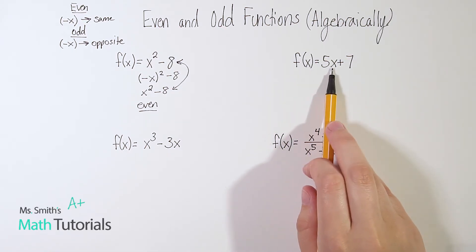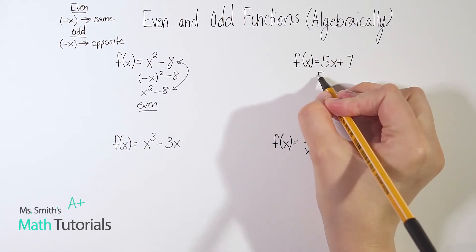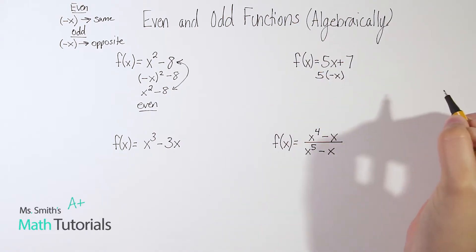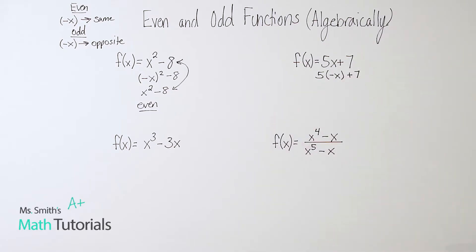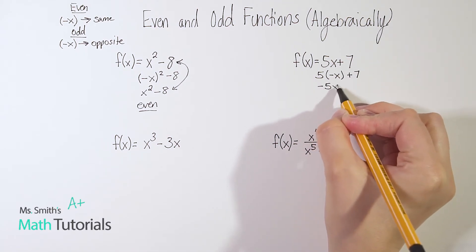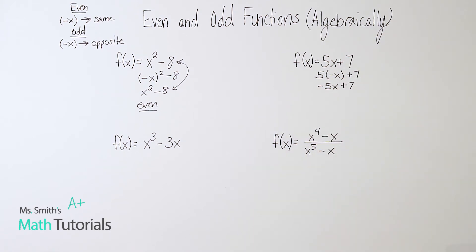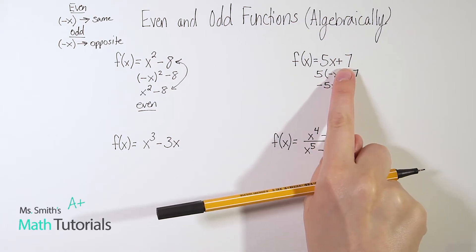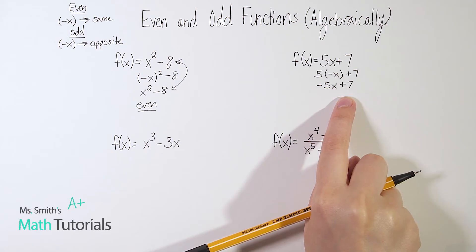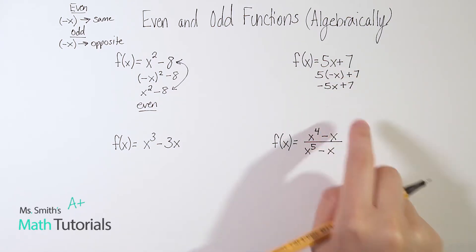Let's try this one. Remember, instead of x, we're going to plug in negative x and see what happens. So five times negative x plus seven. Well, five times negative x is going to be negative 5x, plus seven comes down. Now let's compare that to what we had to start with — the five flipped sign, but the seven did not. So this is not the same, and it's also not opposite. Even though this one is opposite, every single sign would have to be opposite. So this one's neither.